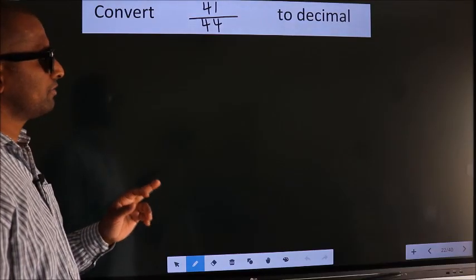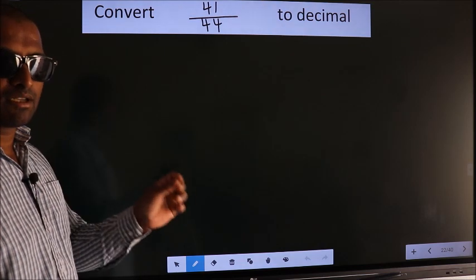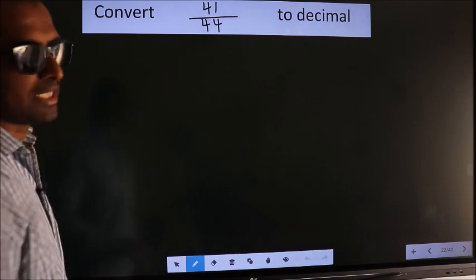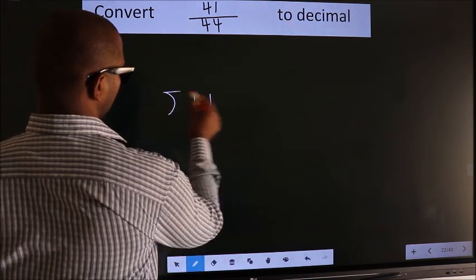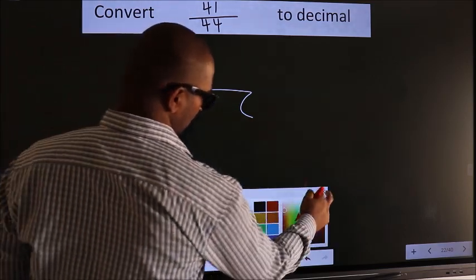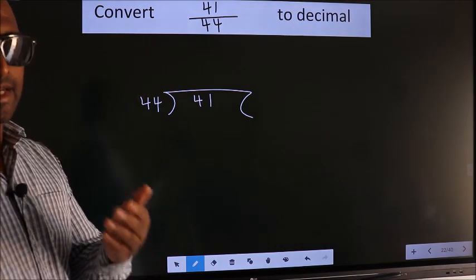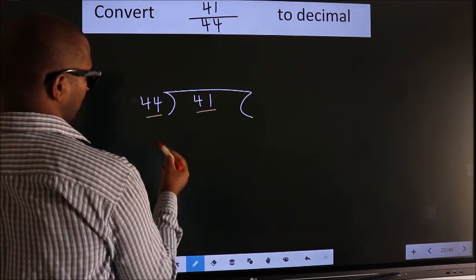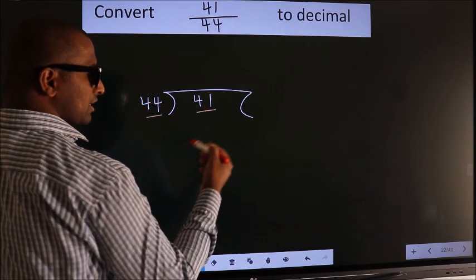Convert 41/44 to decimal. To convert this to decimal we have to divide, and to divide we should frame it in this way: 41 here, 44 here. This is your step 1. Next, 41 is smaller than 44, so what we should do is...